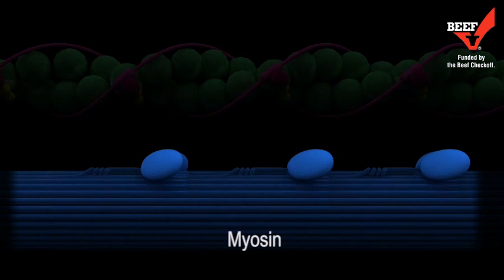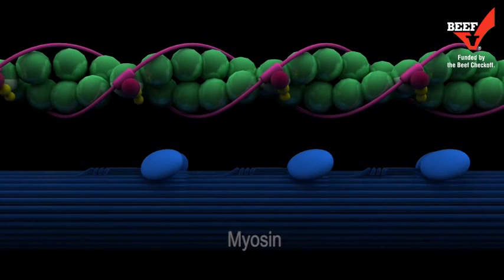Myosin, or the thick filaments, are primarily elongated rod-shaped proteins with double laterally projecting heads.